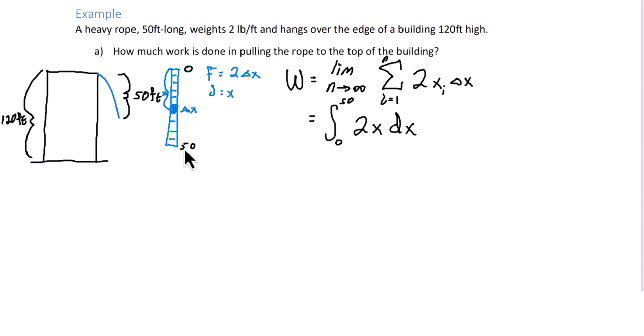From here we'll integrate. We get x squared, and we're evaluating from 0 to 50. That is 50 squared minus 0 squared. This is 2500, and the units in this case, foot pounds.